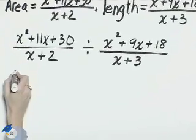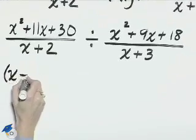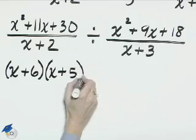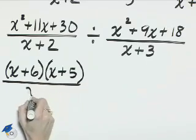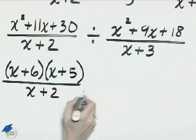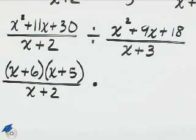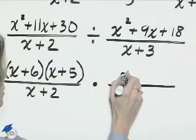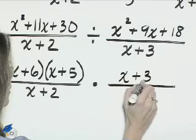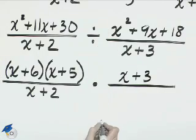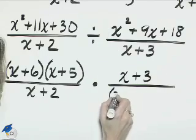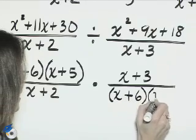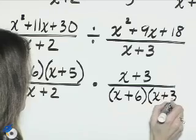This first numerator we'll factor into x plus 6, that quantity times x plus 5. We'll have x plus 2 in this denominator. We'll change the division to multiplication. The reciprocal of this second fraction will give us x plus 3 in the numerator, and x squared plus 9x plus 18 factors into x plus 6 times x plus 3.